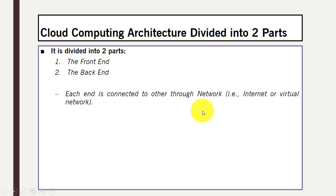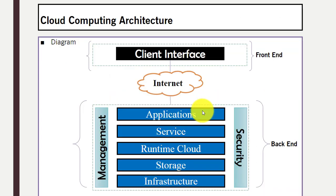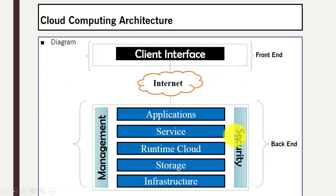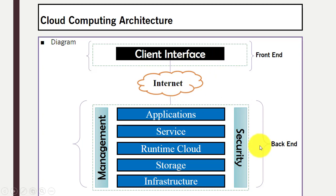Or virtual network. So we have front end and back end in the cloud computing architecture. You can see in the diagram — this is the front end and this is the back end. Both front end and back end are connected with each other through internet. In the front end we have the client interface.